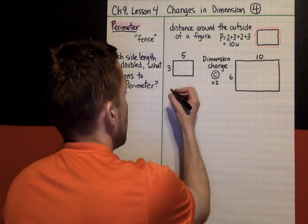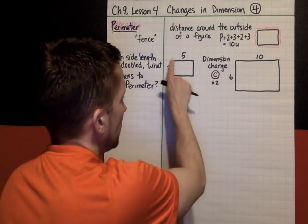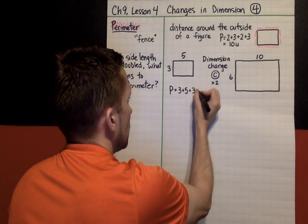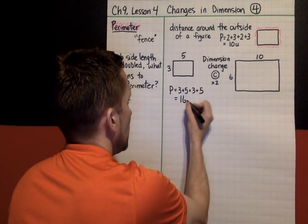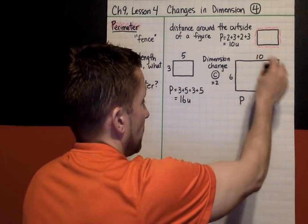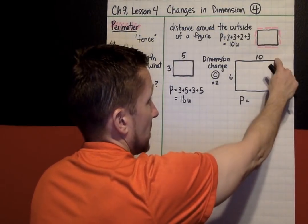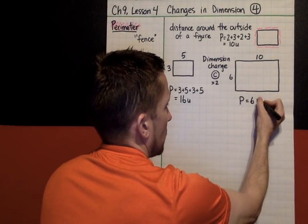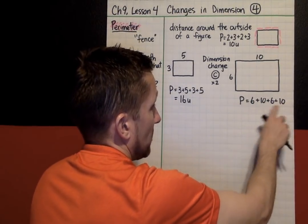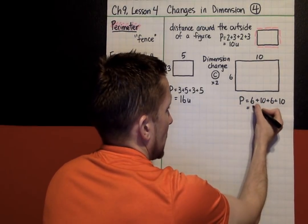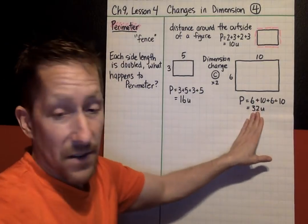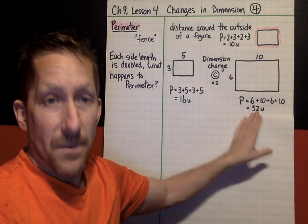If I double the dimensions, this is now 6 and the 5 gets doubled to 10. Here's our original and here is the figure with dimensions doubled. We would just find the perimeter of both figures. The perimeter of the original is 3 plus 5 plus 3 plus 5, which comes to 16 units. The perimeter of the figure where the dimensions are doubled is 6 plus 10 plus 6 plus 10, which is 32 units of fence.